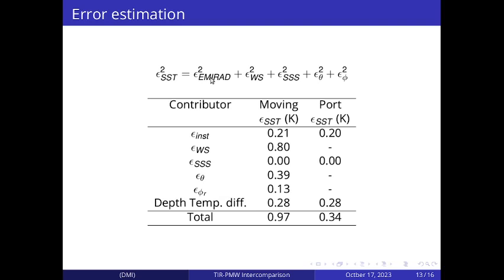plus the wind speed and sea surface salinity and the incidence angle and the relative angle of the ship with respect to the wind. And we obtained an uncertainty of 0.97 Kelvin for the data collected while the ship was moving and 0.34 for steady conditions.